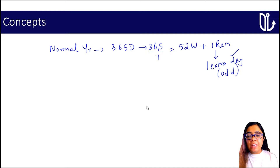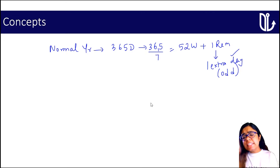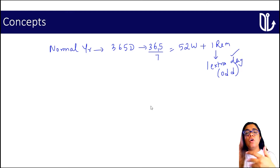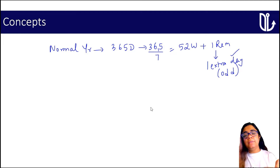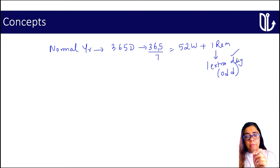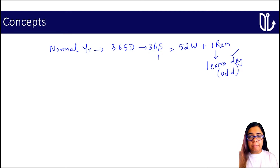Because of this one extra day, let's say this year if 1st of Jan comes on a Monday, next year 1st of Jan will come on a Tuesday, then it will come on a Wednesday. So it keeps on moving ahead by one day because of this one remainder.